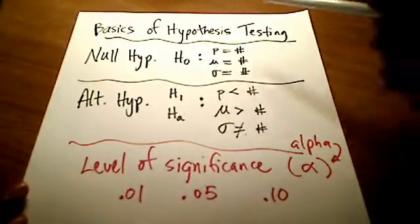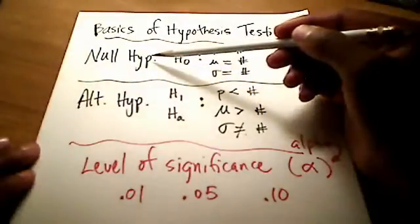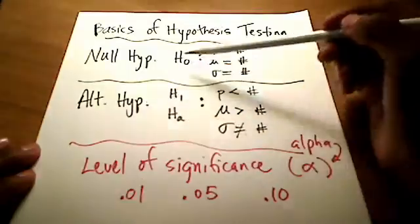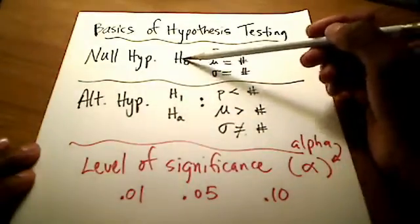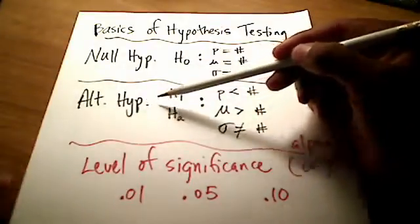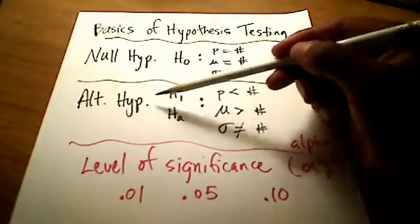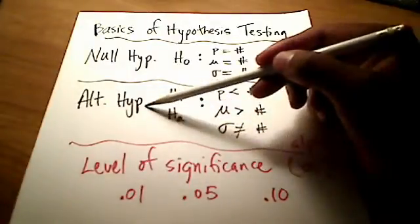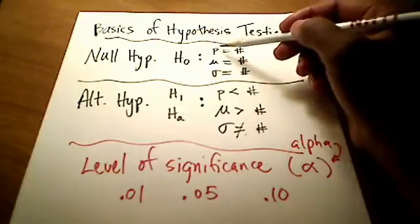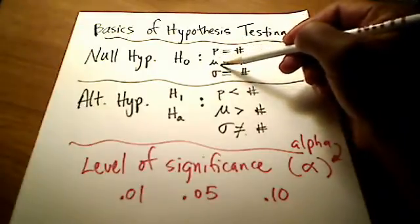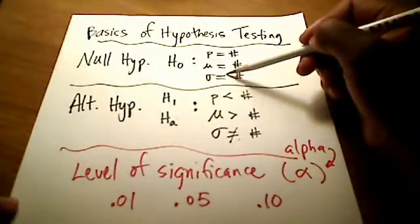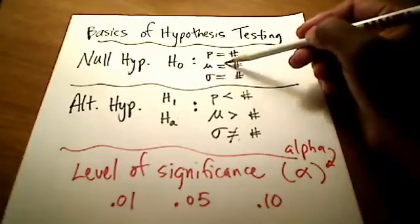No matter what type of hypothesis testing you're using, whether it's the traditional method or p-value method, there's always going to be a null hypothesis and an alternative hypothesis. Most books use H sub zero or H naught for your null hypothesis, and you might see H sub one or H sub A for the alternative hypothesis. They both mean the same thing. The null hypothesis always has an equal sign in it, no matter what you're talking about.